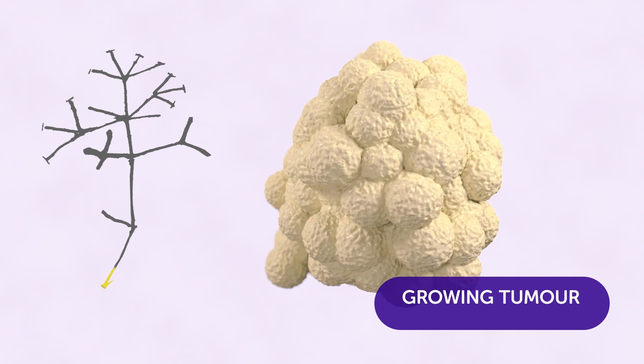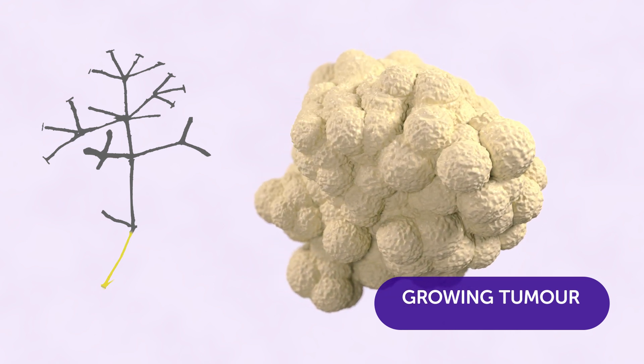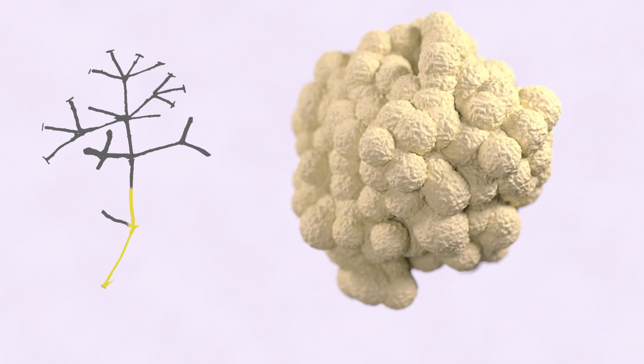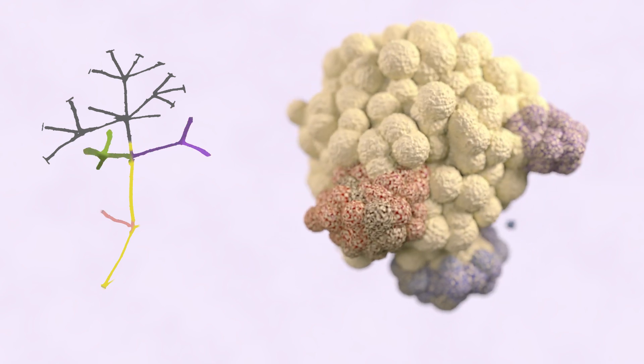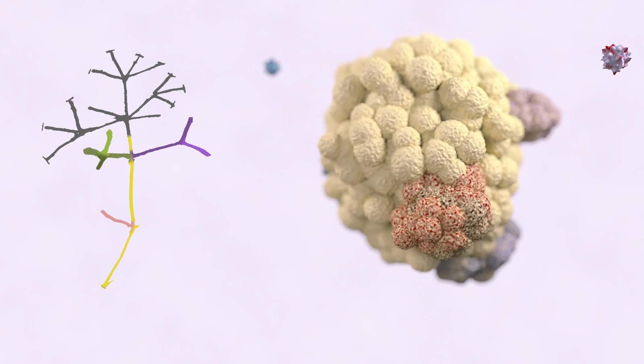And we now know that as a tumor grows, it evolves too, leading to some parts being different from others. This makes it difficult for our immune system to tackle.